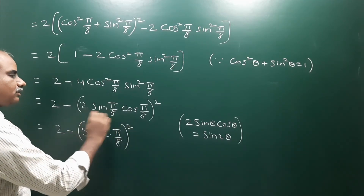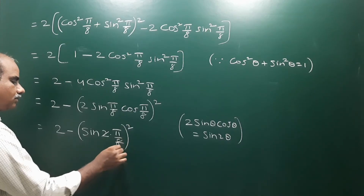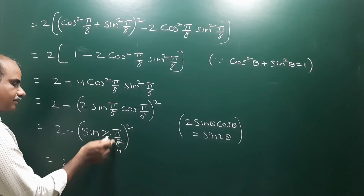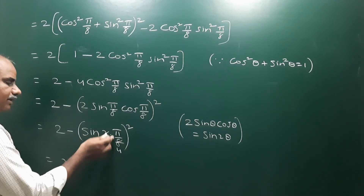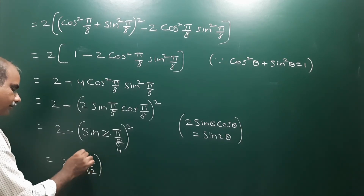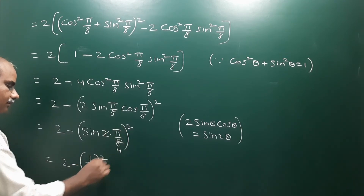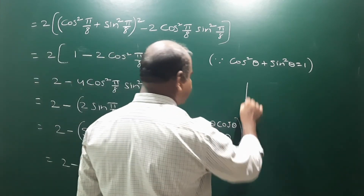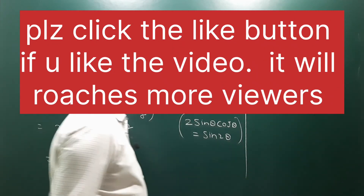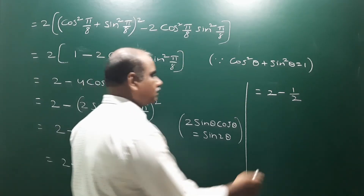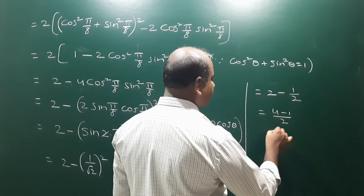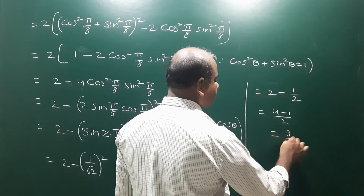Therefore the expression becomes 2 - [sin(π/4)]². Now sin(π/4) = sin 45° = 1/√2. So [sin(π/4)]² = (1/√2)² = 1/2. Thus we get 2 - 1/2. Taking LCM: 4/2 - 1/2 = 3/2.